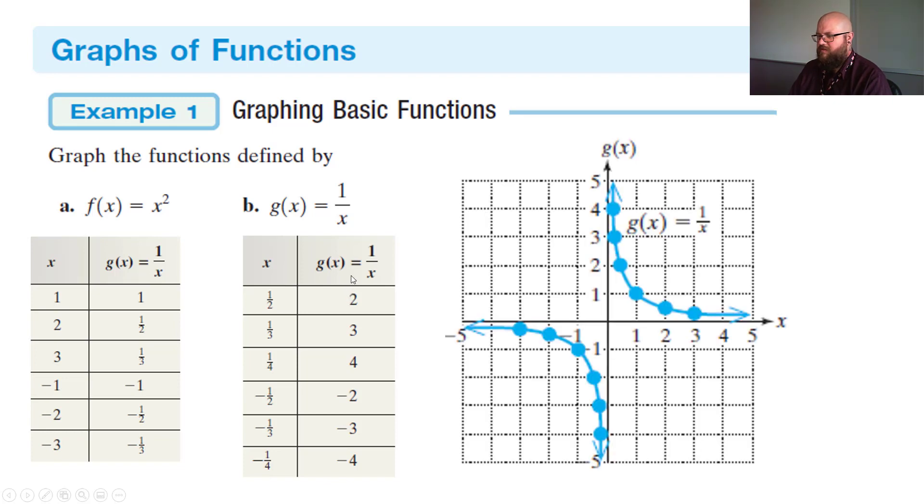So if we do that, it gives us these points right here. Again, as you can see, when we went to 1, it gave us 1. We went to 2, then 1 half. Then 3, then 1 third. So we've got those values there.